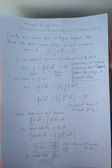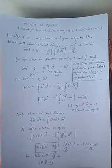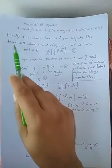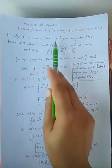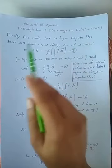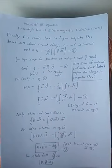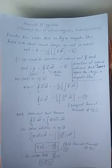Maxwell's third equation is based on Faraday's laws of Electromagnetic Induction. As we know, Faraday's law states that as long as the magnetic flux linked with a closed circuit changes, an EMF is induced. The magnitude of EMF is always equal to the rate of change of magnetic flux.